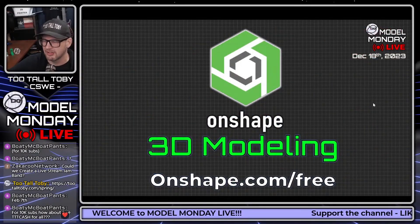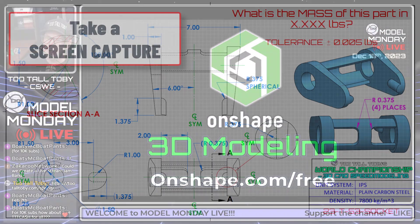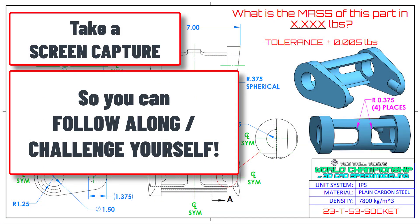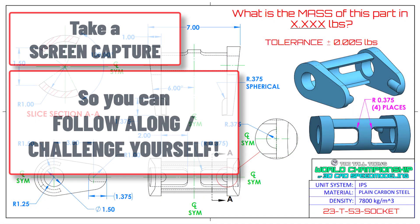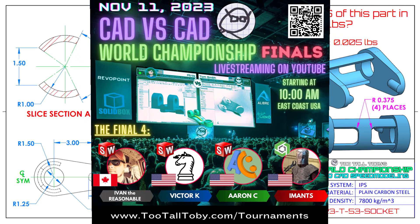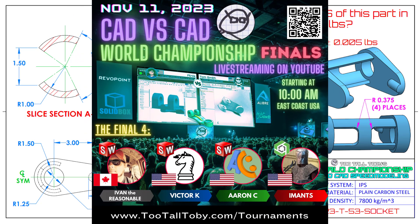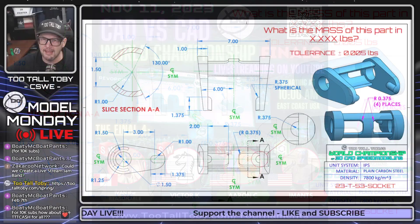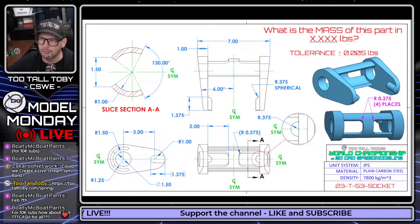Let's take a look at this OnShape 3D modeling challenge. Remember, you can do this at OnShape.com free — you can sign up for a free account and model this. I'm using the free version of OnShape to create this model. The model is called 'Socket' and it comes from our world championship of 3D CAD speed modeling tournament.